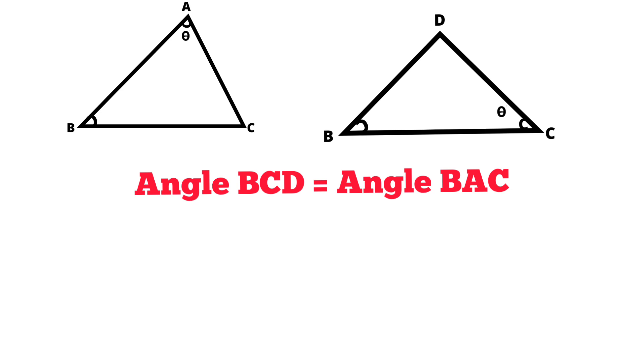Then, angle B is common for both these two triangles. So let's consider angle B as alpha. Now, if you observe the figure, both triangles have an angle equals to theta and an angle equals to alpha.